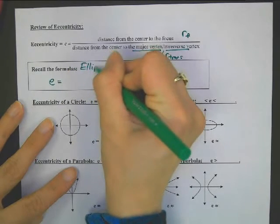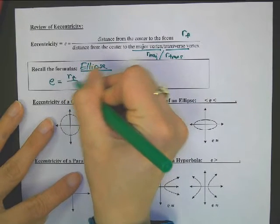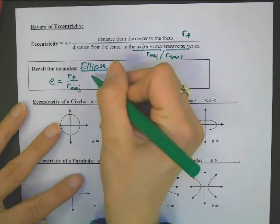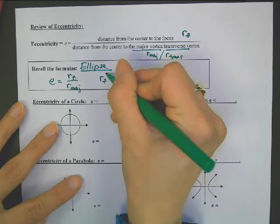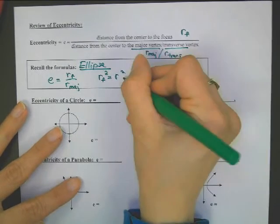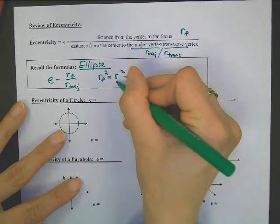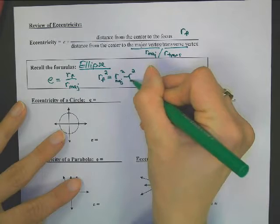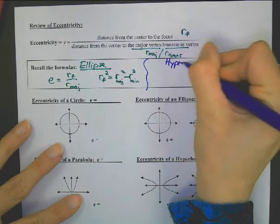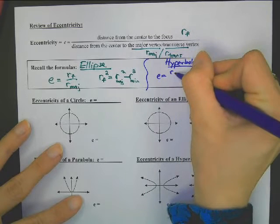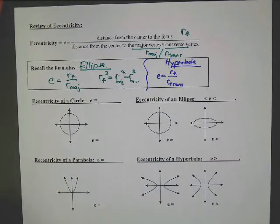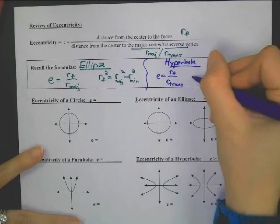Eccentricity equals — let's do all the ellipse ones first. Ellipse formulas: it's r sub f over r major. For the r sub f squared formula, ellipse equations have pluses, so this formula gets the minus. You have to make sure you do major squared minus minor squared. And for hyperbolas: eccentricity is r sub f over r trans, so I care about who is the transverse — it doesn't matter who's big or small.